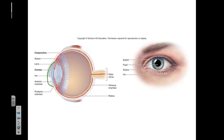Here we can see the cornea, and then the conjunctiva, which is the membrane on the edge of the eye. That conjunctiva merges with the white of the eye — the sclera — to help hold the eyeball in place. From an anterior view, you'll see the cornea over the top of the iris and pupil, and the conjunctiva would be right around the border of our eye, which is very difficult to see from that view.